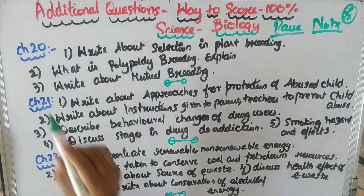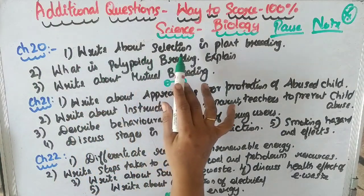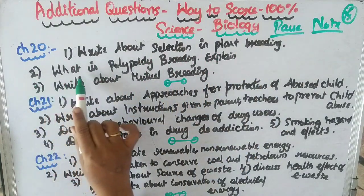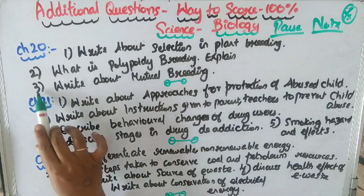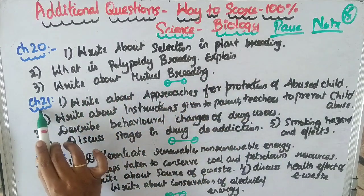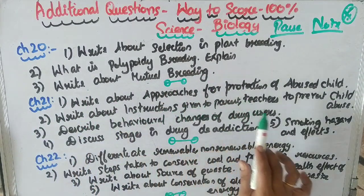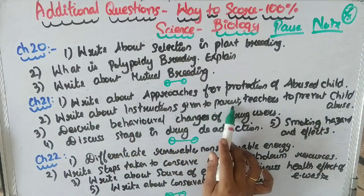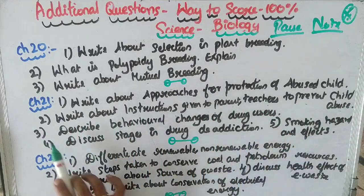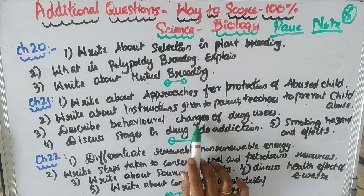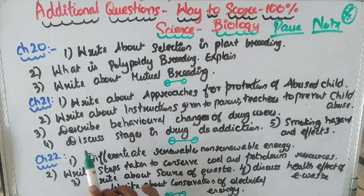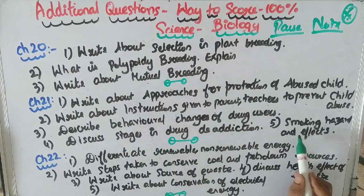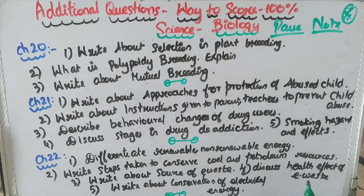Question 6: Write about selection in plant breeding. Question 7: Write about mutation. Question 8: Explain quality breeding and mutual breeding. Question 9: Write about the approaches for protection against abuse, instructions given to parents and teachers to prevent child abuse, and describe the behavioral changes of drug users. Question 10: Discuss the stages in drug de-addiction, smoking hazard effects, and the effects of alcohol.